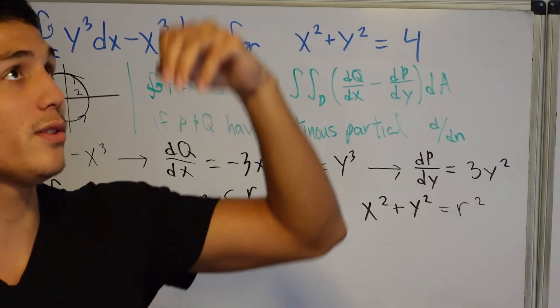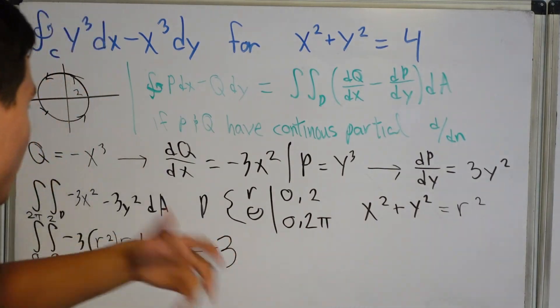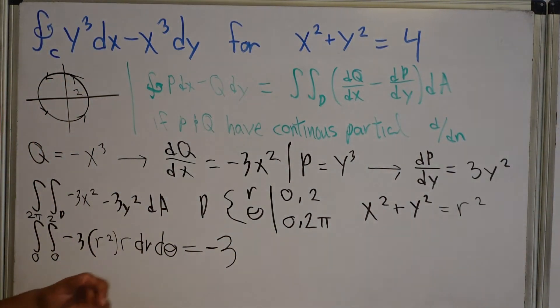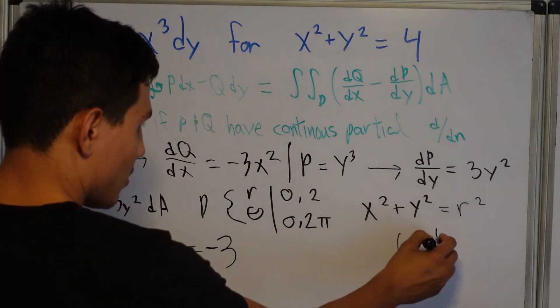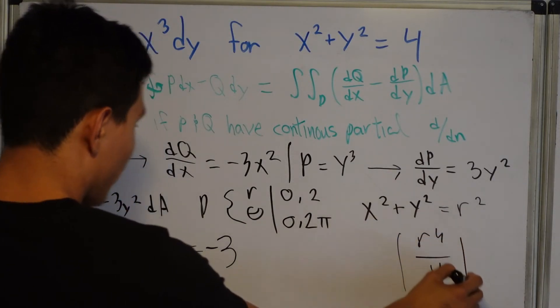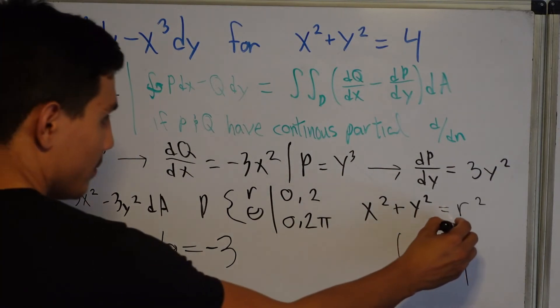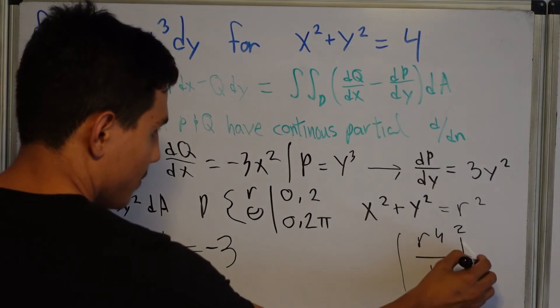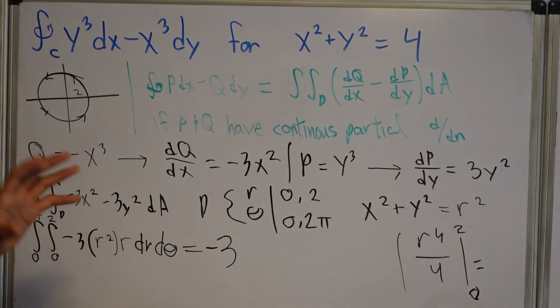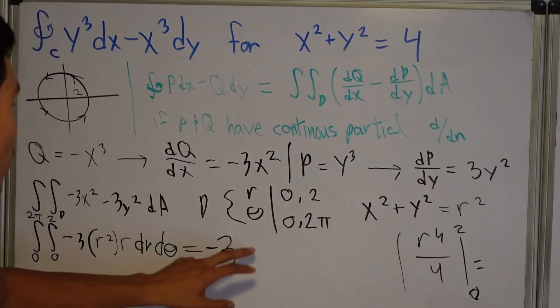So if we integrate R cubed, what's that going to be? It's going to be R to the 4th divided by 4. Okay. And I'll write it right here like this. R4 divided by 4 for what? For 2 to 0. Okay.